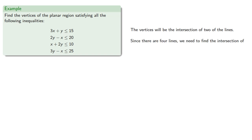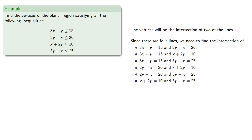Since there are four lines, we'll need to find the intersection of... But that's going to be a lot of work, and some of these intersections won't be vertices of the region.